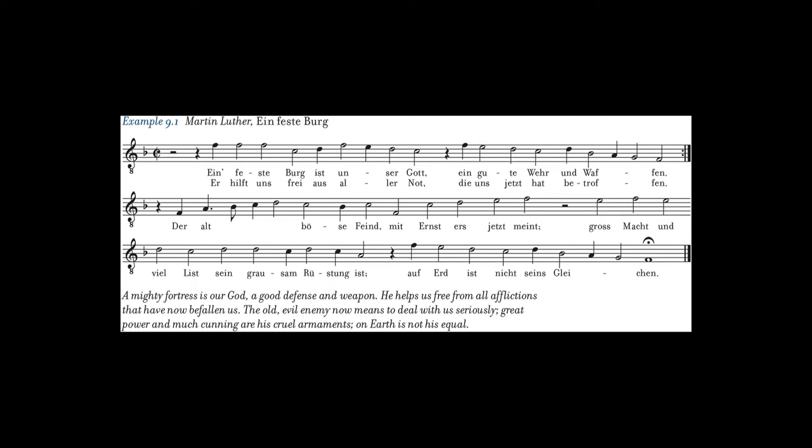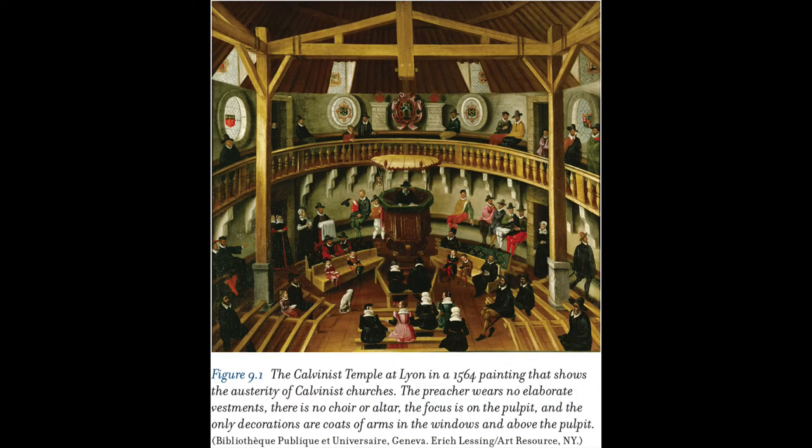Composers used a variety of compositional approaches to write polyphonic settings of chorales for the home, for schools, and for performance by choirs in church. Chorale motets borrowed techniques from Franco-Flemish motets such as cantus firmus or paraphrase technique. Settings with the chorale in the top voice accompanied by block chords became common in the late 16th century, and after 1600 it was customary for the organ to play all parts while the congregation sang the tune.